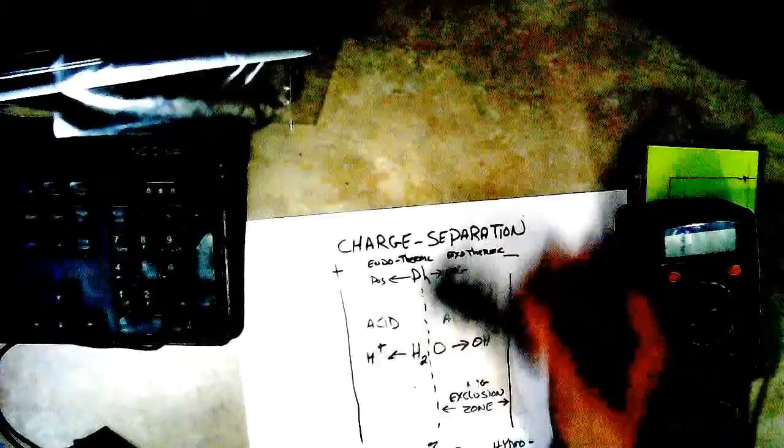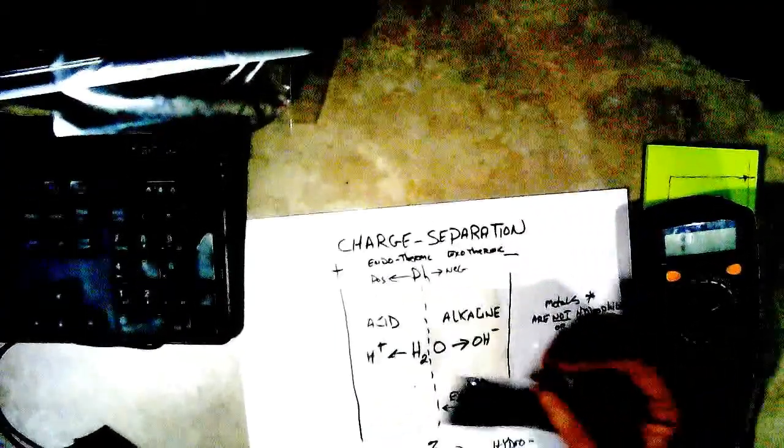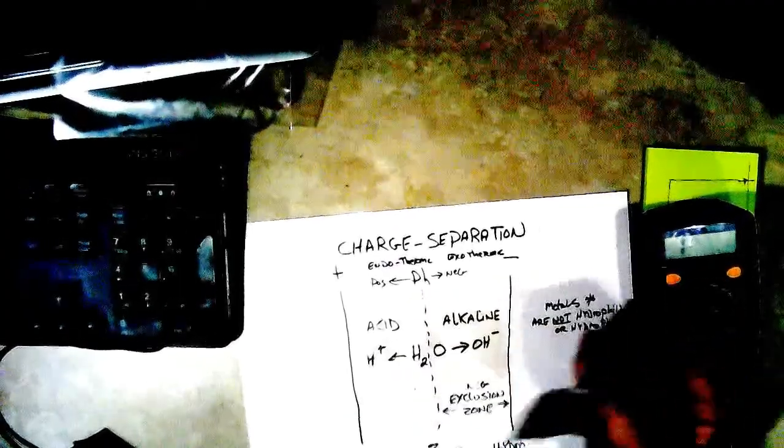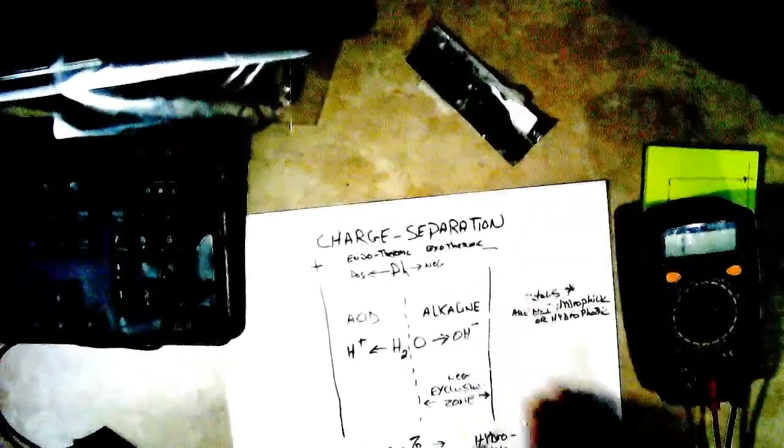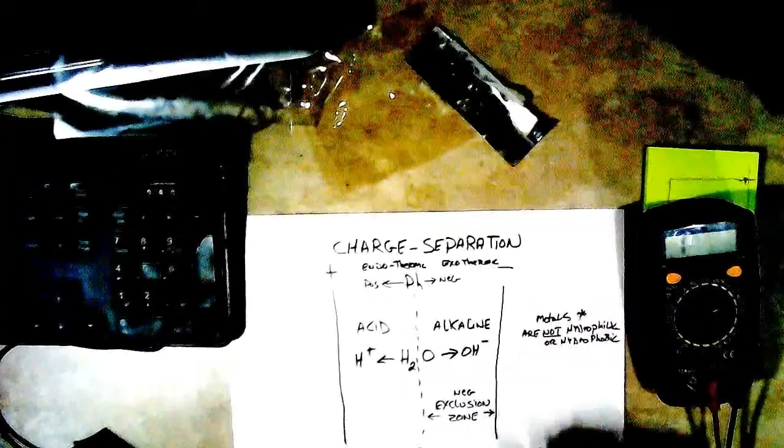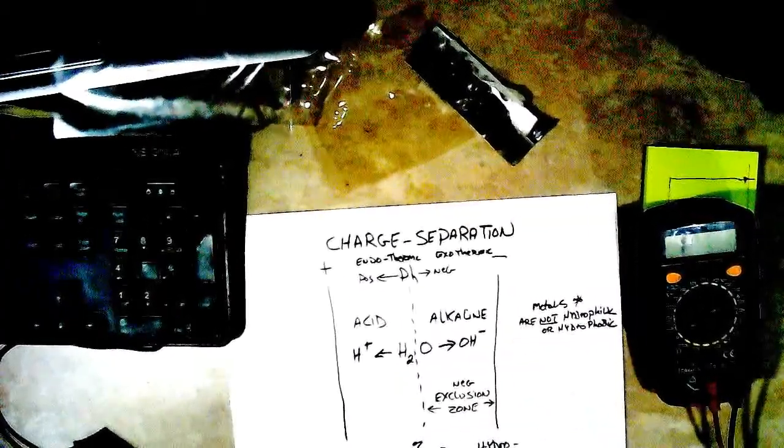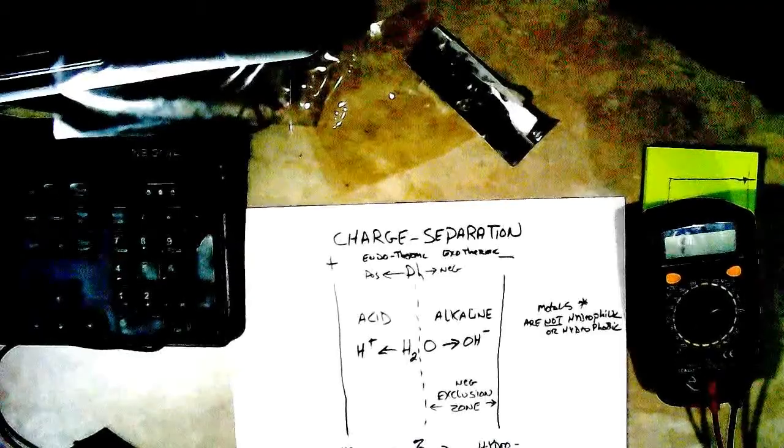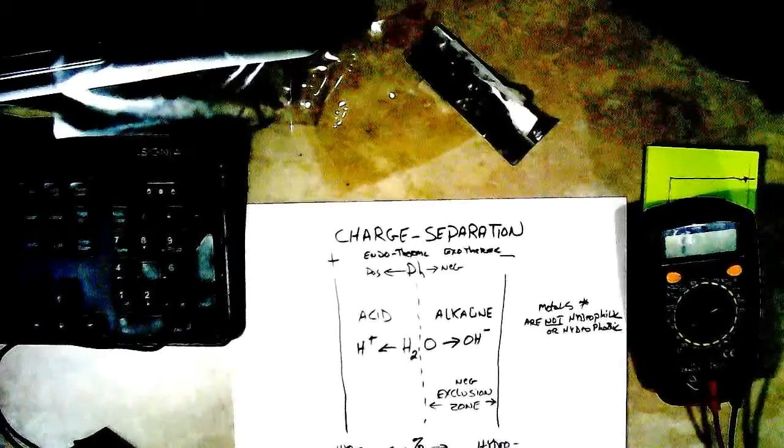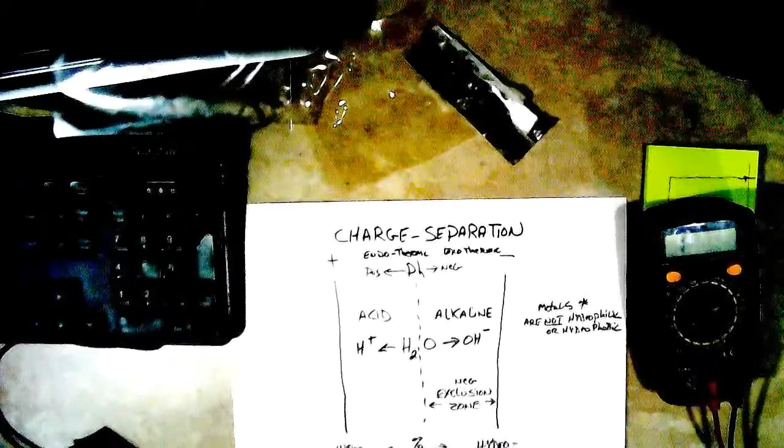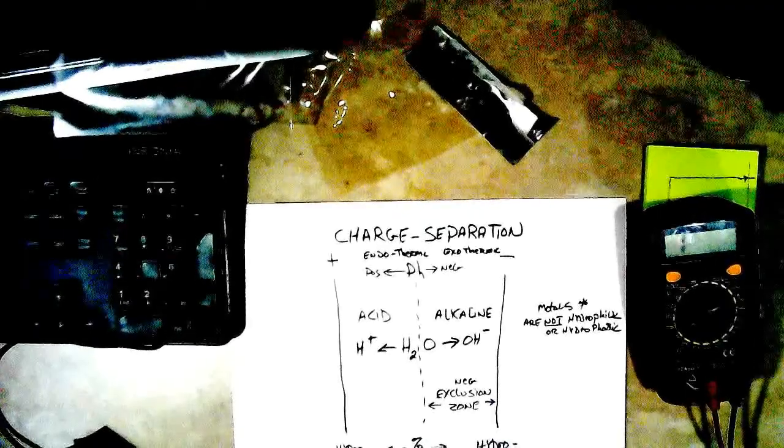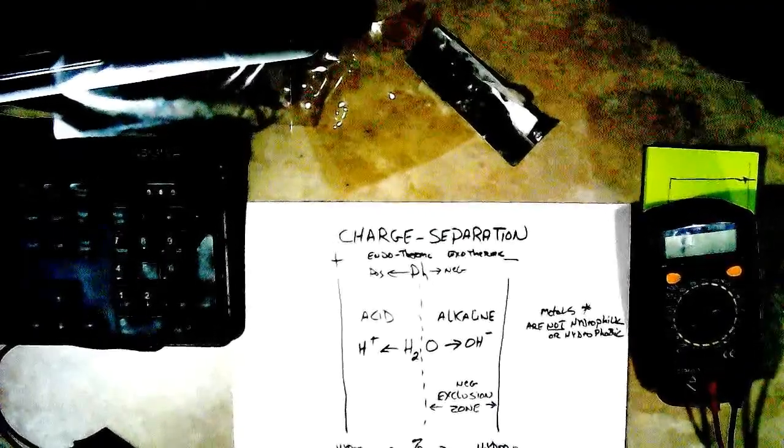You can see that the conductivity of it depends on charge separation. If you take the charge separation away, your conductivity goes down. Put the charge separation on there, your conductivity goes up. Now there's a few things that we can infer from all this, that if you want to build a self-charging battery, ideally what you want to have is a hydrophilic surface on your negative electrode, and you want your positive electrode to be hydrophobic.